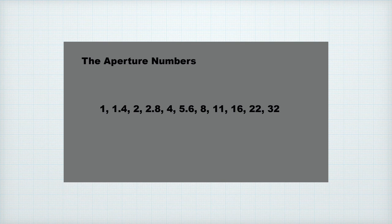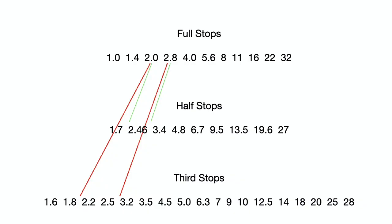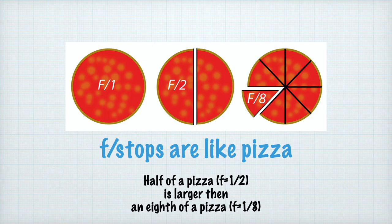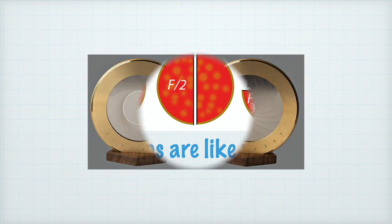The usual f-stop progression on lenses is f/1, 1.4, 2, 2.8, 4, 5.6, 8, 11, 16, 22, 32, and on. Each number is 1.4 times the previous number — 1.4 is the square root of 2. Most cameras can be set to show half or third stop increments. If you're wondering why smaller numbers describe a larger opening, it's because these are actually fractions: f equals 1/1 or 1/2 or 1/4. Half a pizza is larger than a quarter of a pizza, which is larger than an eighth of a pizza.